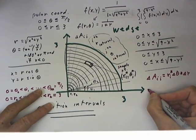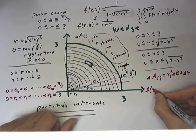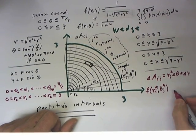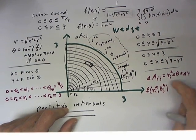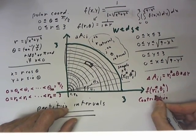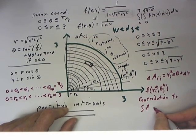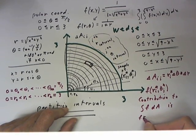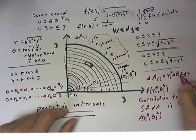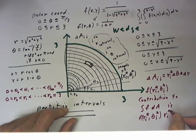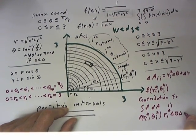The value of the function is f evaluated at our sample point, r_i* theta_j*. So the contribution to the integral from this interval, the contribution to the integral of f with respect to a, is f(r_i*, θ_j*) multiplied by delta a_ij, our area of the ijth interval, which is r_i* delta theta delta r.